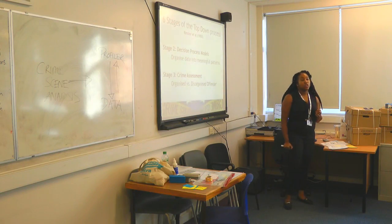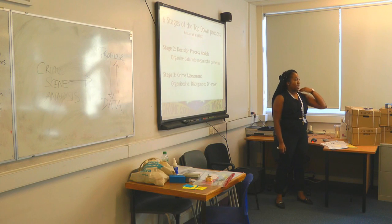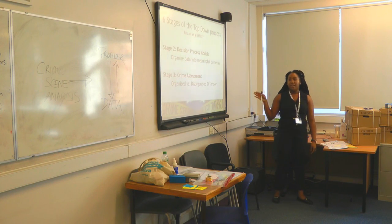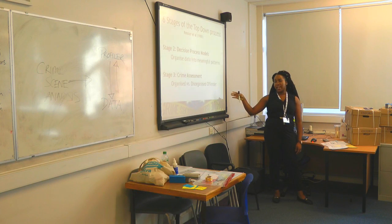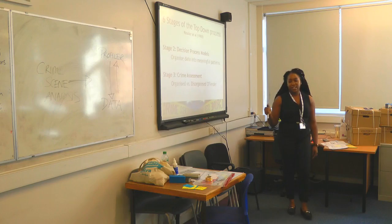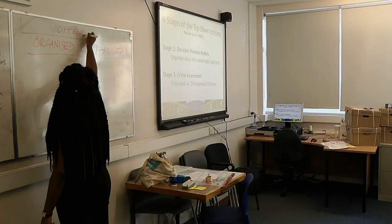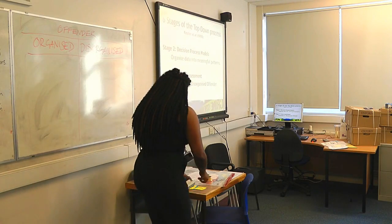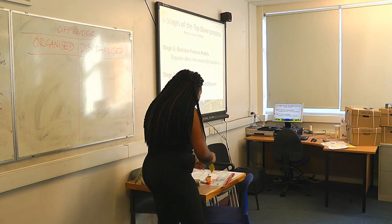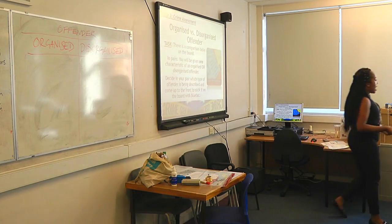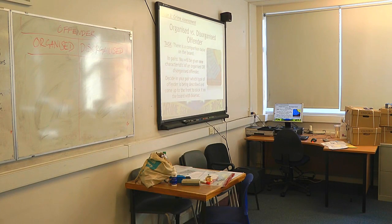Stage three is called crime assessment. There are two stages called crime assessment, but this one is with reference to the offender. We have the category of organized versus disorganized offender. I'm going to give you guys one between two — some of you may have one each — different characteristics of offenders, and you need to decide whether each characteristic matches someone who would be deemed organized or disorganized.